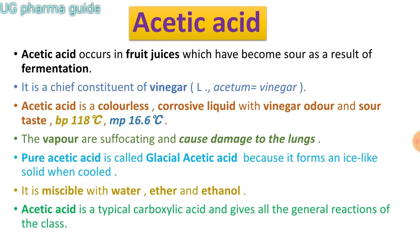और यह इसका जो purest form है उसे कहा जाता है glacial acetic acid, क्योंकि यह ice के type का structure बनाता है जब इसको बहुत ठंडा किया जाता है. और यह water, ether, और ethanol — इन सारे solvents में, मतलब polar और non-polar solvents में — dissolve हो जाता है. और acetic acid सारे general reactions देता है जो typical carboxylic acids देते हैं.